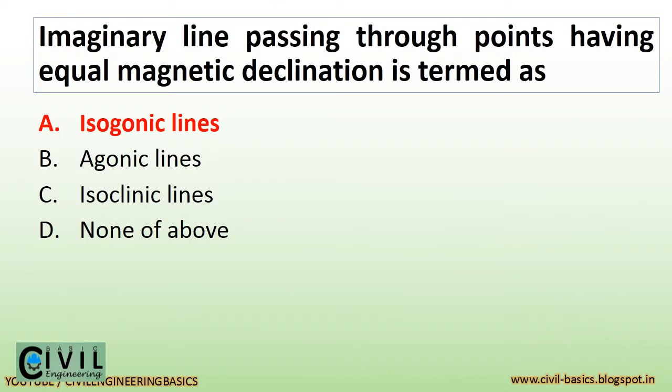Imaginary lines passing through points having equal magnetic declination are termed as isogonic lines.